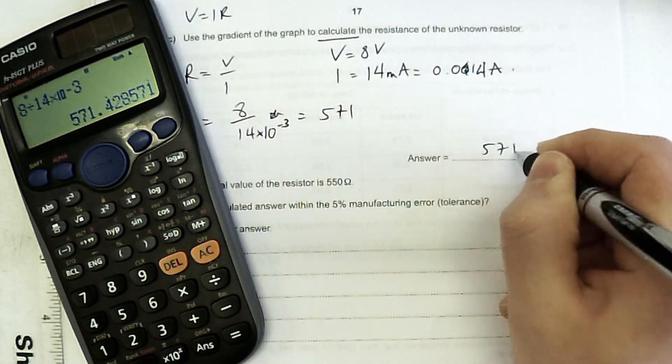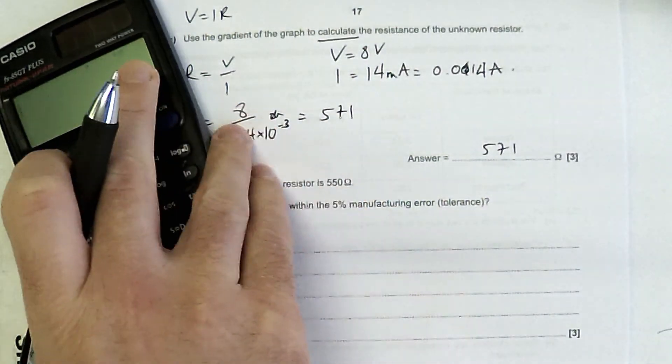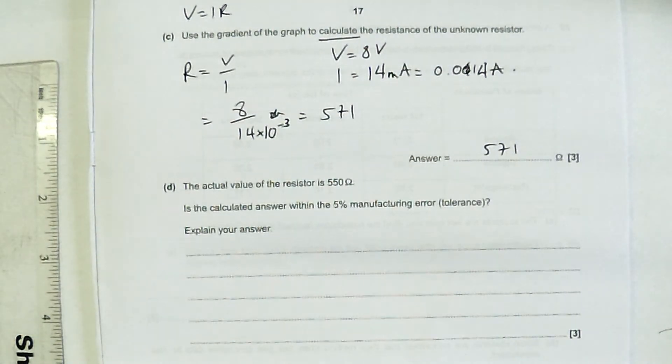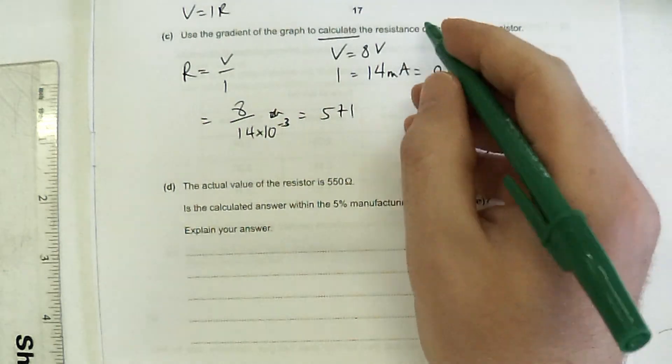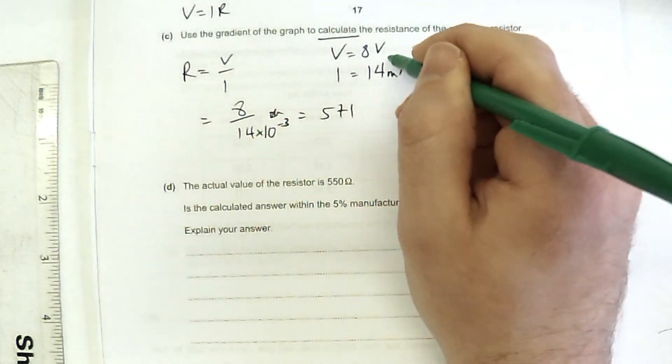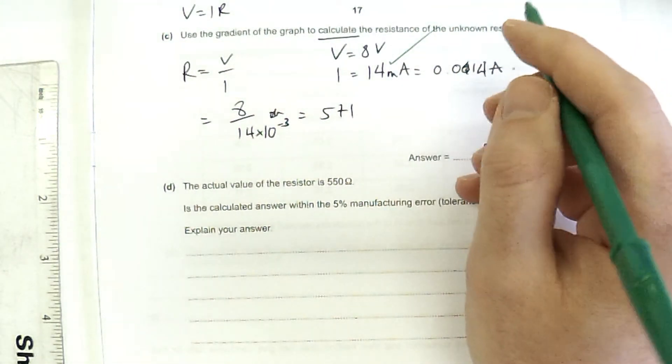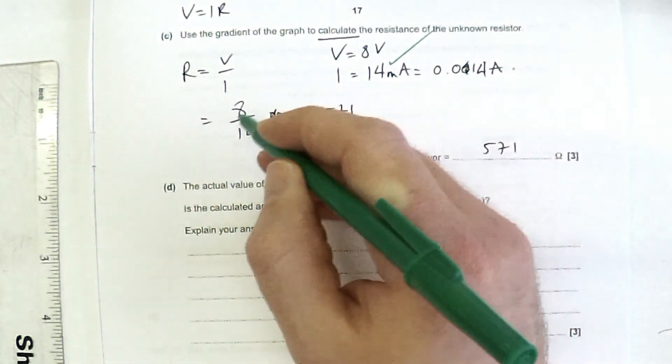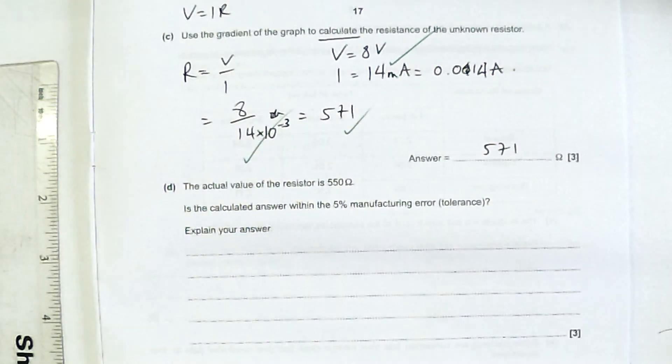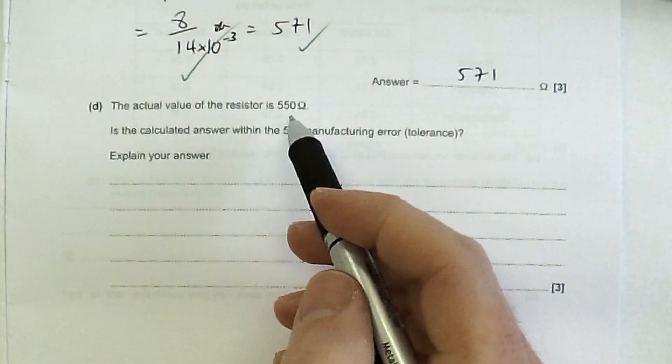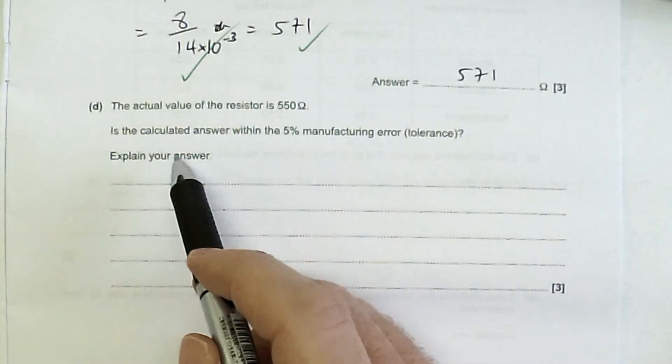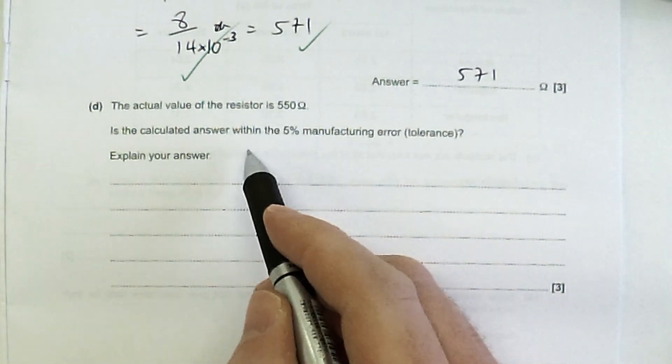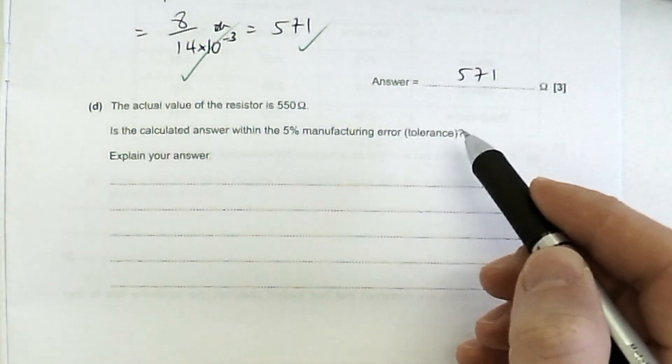So 571.4, 571 is absolutely fine. Three significant figures. Let's check my rounding there. So here we've got marks for reading the numbers off correctly. Importantly, a mark for having this converted correctly. A mark for getting it in the right place and a mark for the final answer. So the actual value is 550 ohms is the calculated answer within the 5% manufacturing error tolerance.